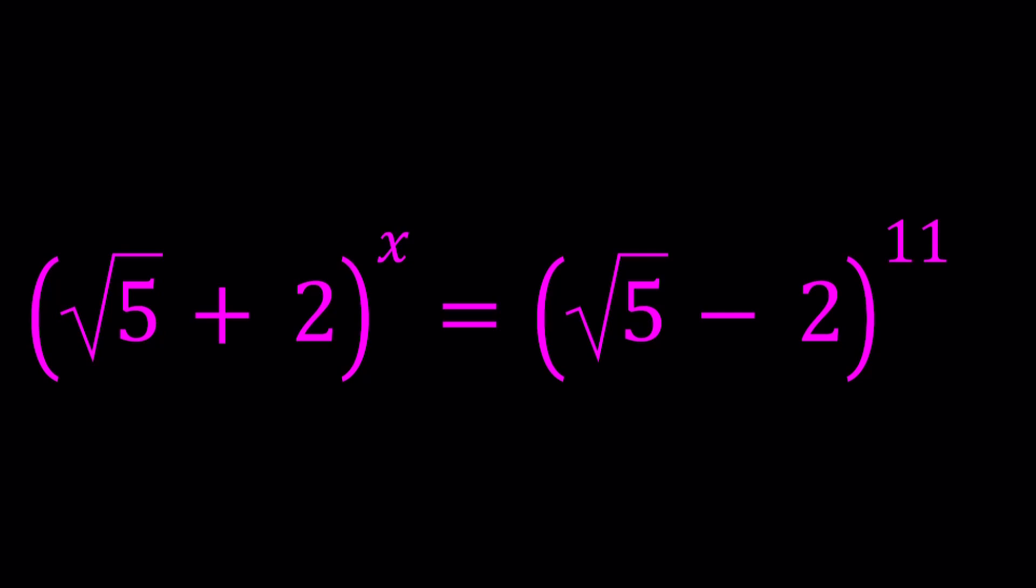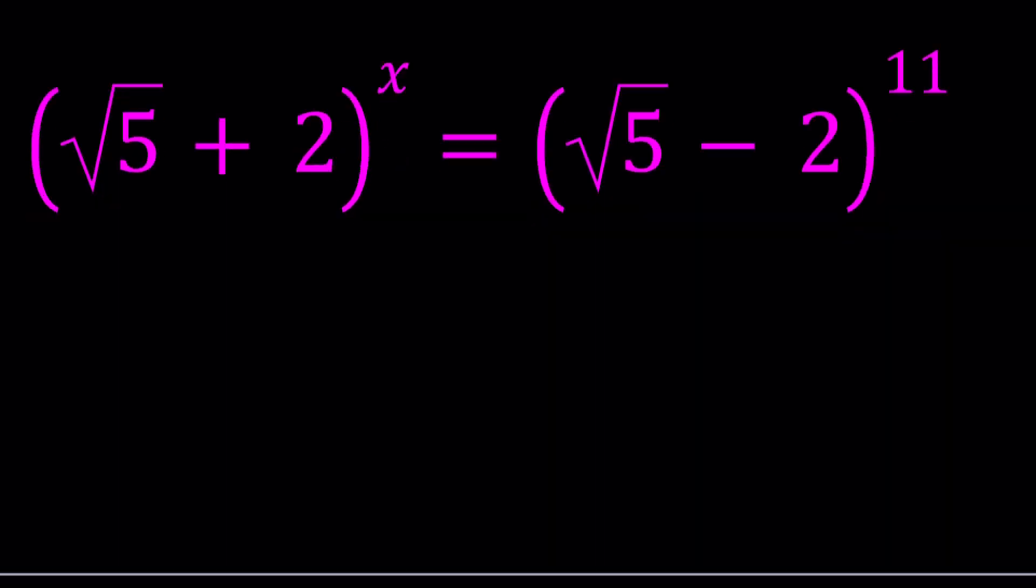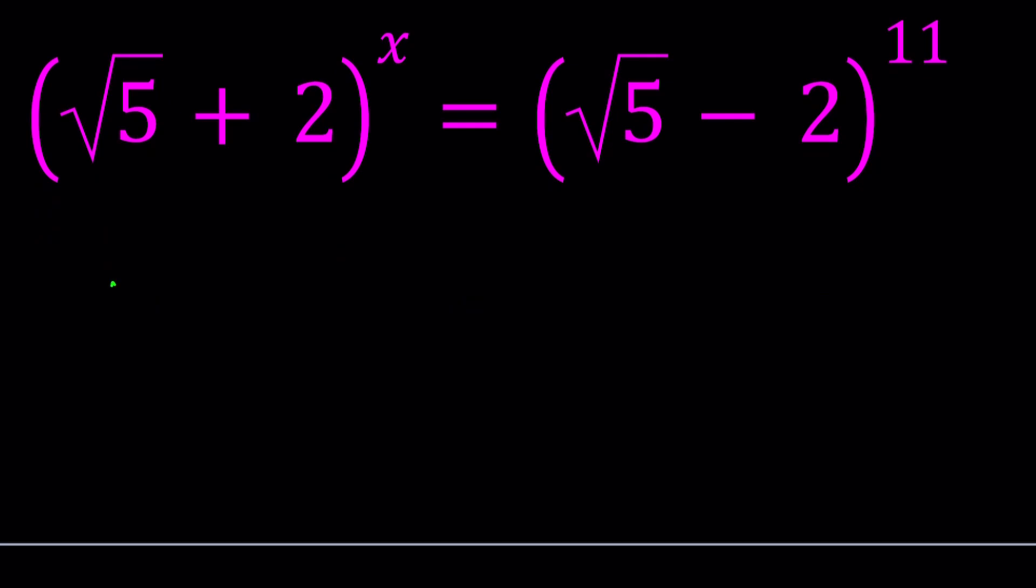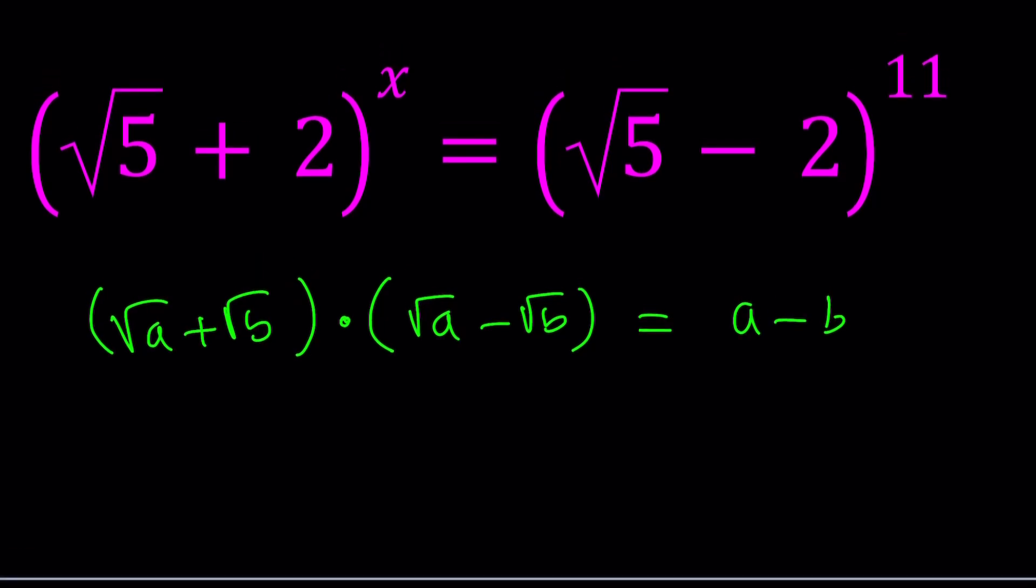How are they related? They are conjugates. Whenever you have two radicals like square root of a plus square root of b and square root of a minus square root of b, they're called conjugates. Because when you multiply them, they give you from difference of two squares a minus b. So that's what we're going to do with these radicals and that's pretty much the basis for both methods.